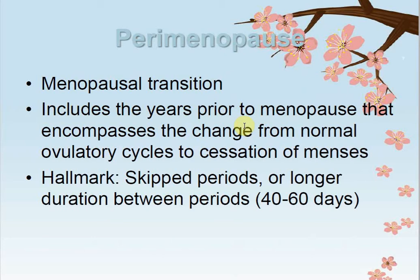Periods may occur at 2 to 3 month intervals. The normal menstrual cycle is 28 days, but the cycle may extend to 40 to 60 days between regular periods. That is the pre-menopausal symptom.